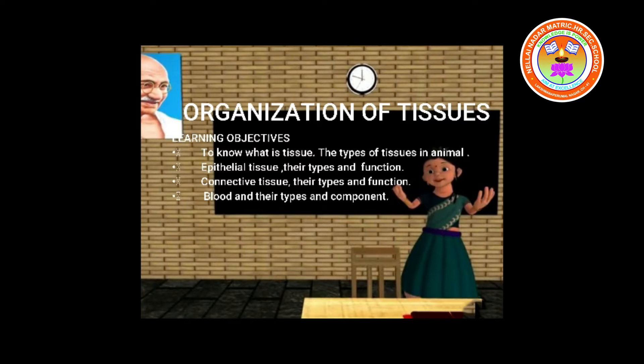In simple epithelial tissue, the cells are tightly packed and stuck very closely to each other, so close they look like a continuous sheet of cells. The tissue lacks blood vessels. All the nutrition needed for the cells is supplied by the layer on which epithelial cells lie. Since this layer is present at the base of all the cells, it is called the basement membrane.